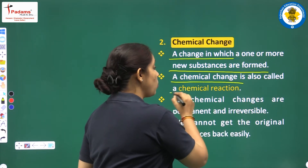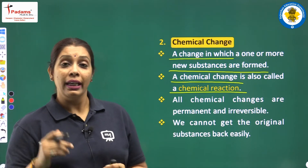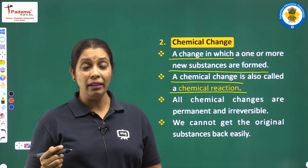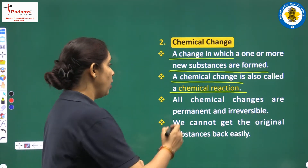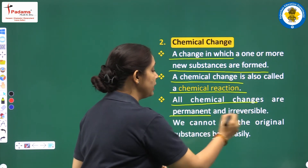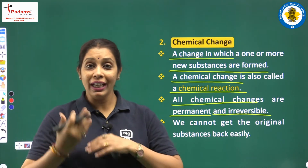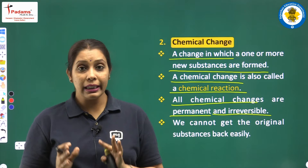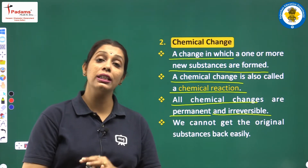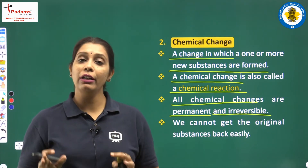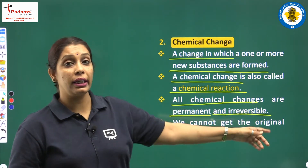A chemical change is also called a chemical reaction — that is an important one. Is a chemical reaction a chemical change? Yes, it is a chemical change. All chemical changes are permanent and irreversible. In physical change, we had studied that physical changes are temporary and may be reversible. Generally, physical changes are reversible, but chemical changes are irreversible.